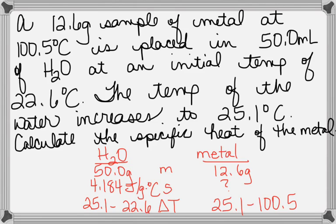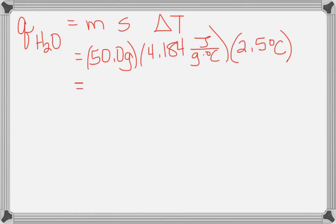So with all that information, what can I calculate? Don't I have enough information about the water, I have m, S, and delta T, that I can calculate Q for the water? Okay, so let's do that. What do you all get for Q for your water? Do you get 523 joules? Okay. Questions on that one?